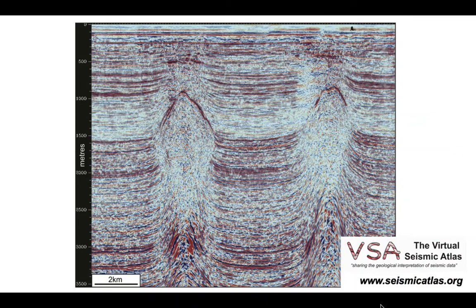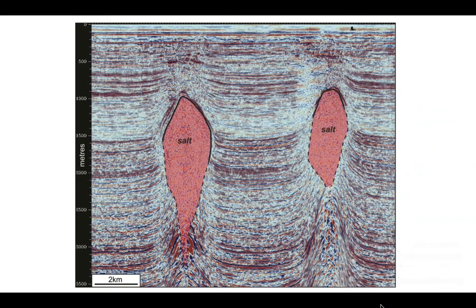So where's the salt in this image? We can interpret the top of the salt quite well — it generates a good reflection — but the flanks of the salt, particularly as you go down, become less distinct. As you approach the edge of the salt as I picked it, the amplitude in the seismic reflections dims significantly, and these are common imaging problems around salt.